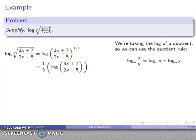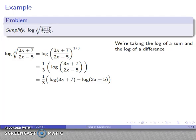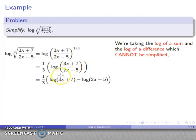Now this inside expression is the log of a quotient, so I apply the quotient rule: the log of a quotient is the difference of the two logs. That gives log(3x+7) minus log(2x−5). Since we're now taking the log of a sum and the log of a difference, neither can be simplified further, so at this point we are done with our simplification.